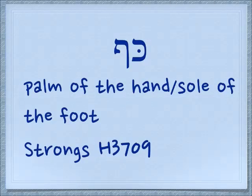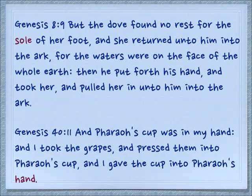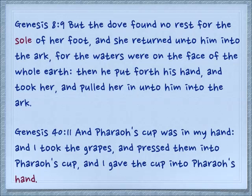These two letters together make a word — kaf — which means the palm of the hand or the sole of the foot. Genesis 8:9: 'But the dove found no rest for the sole of her foot and she returned unto him into the ark, for the waters were on the face of the whole earth. Then he put forth his hand and took her and pulled her in unto him into the ark.' In Genesis 40:11, Pharaoh's cup was in my hand and I took the grapes and pressed them into Pharaoh's cup and I gave the cup into Pharaoh's hand, into the palm of his hand.